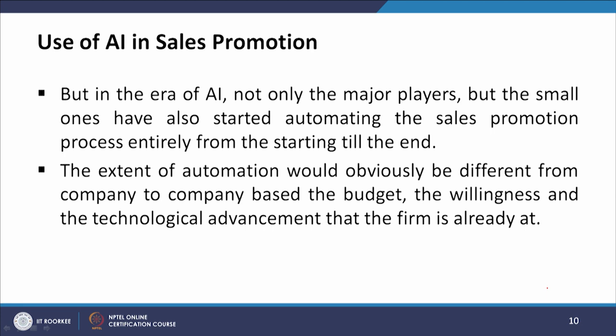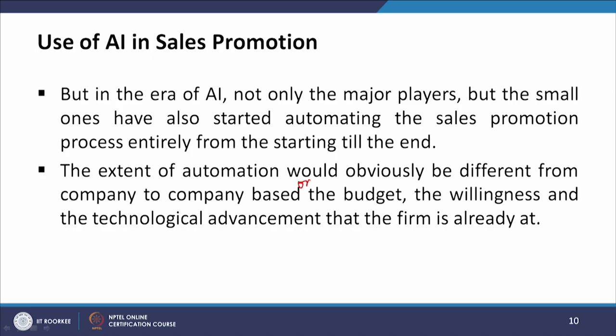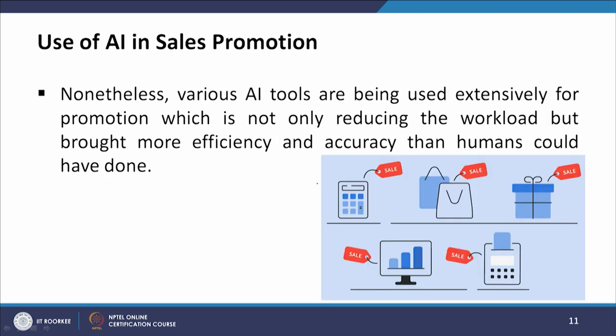But in the era of AI, not only the major players but the small ones have also started automating the sales promotion process entirely from start to end. The extent of automation would obviously be different from company to company based on the budget, willingness, and technological advancements the firm is already at. Nonetheless, various AI tools are being used extensively for promotion, reducing the workload while bringing more efficiency and accuracy than humans could have done.